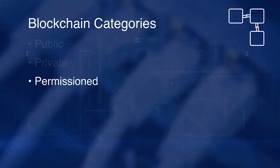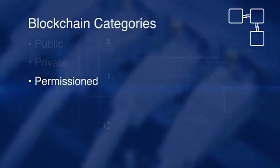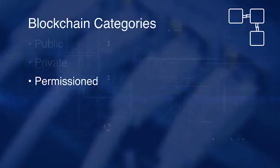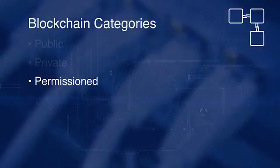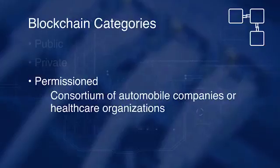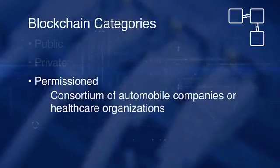The third classification of blockchain is permissioned blockchain, also called consortium blockchain. It is meant for a consortium of collaborating parties to transact on a blockchain for ease of governance, provenance, and accountability — for example, a consortium of all automobile companies or healthcare organizations. Permissioned blockchain has the benefits of a public blockchain while allowing only users with permission to collaborate and transact.